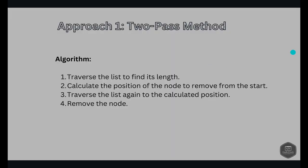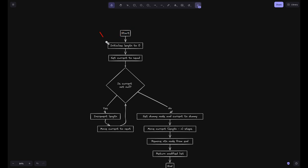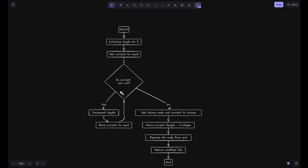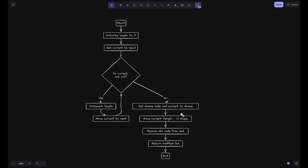Approach one — the two-pass method. First, we traverse the list to find its length, then calculate the position of the node to remove from the start. We move our pointer to reach the (length minus n) position, then change its next reference to next.next. The flowchart: start with length = 0, set current = head, iterate while current is not null incrementing length and advancing current. Then set a dummy node, point current to dummy, and move current length-n steps forward to reach just before the target node.